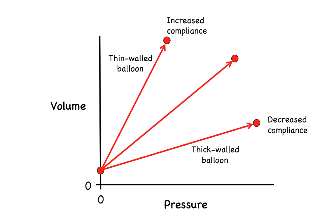If we now think of this balloon as representing the left ventricle of the heart, then it should be apparent that the compliance of the ventricular wall will determine how ventricular pressure and volume change as the ventricle fills with blood. If the ventricle is highly compliant, like a thin-walled balloon, then a given filling pressure will result in a much larger increase in the filled volume. In contrast, if the ventricle is stiff like a thick-walled balloon and therefore has a low compliance, then a given filling pressure will result in less filling of the ventricle. Another way to think of this is that higher filling pressures are necessary to achieve normal filling in a less compliant ventricle.